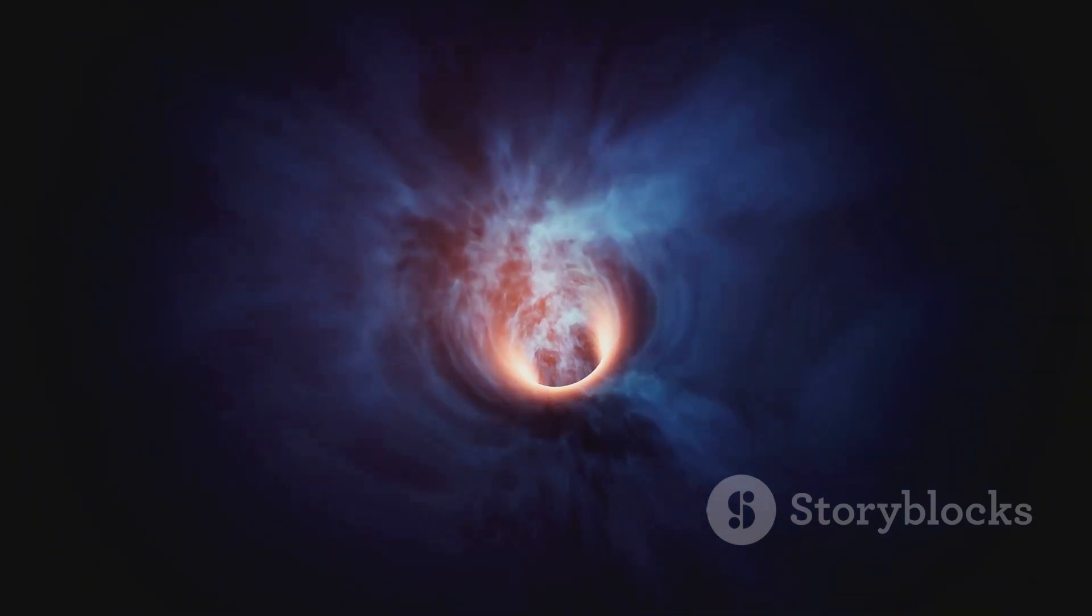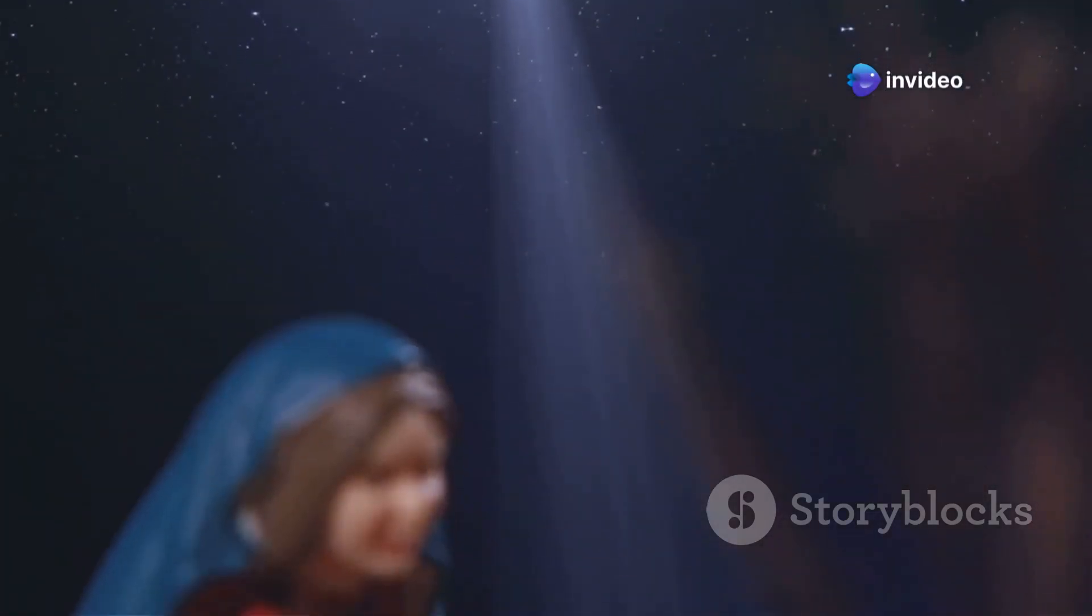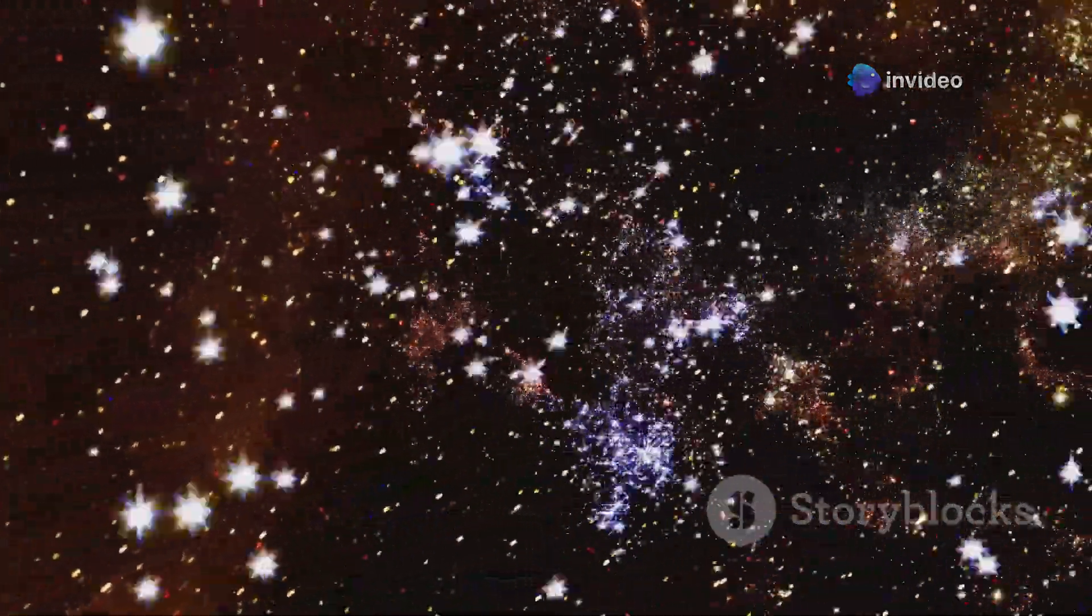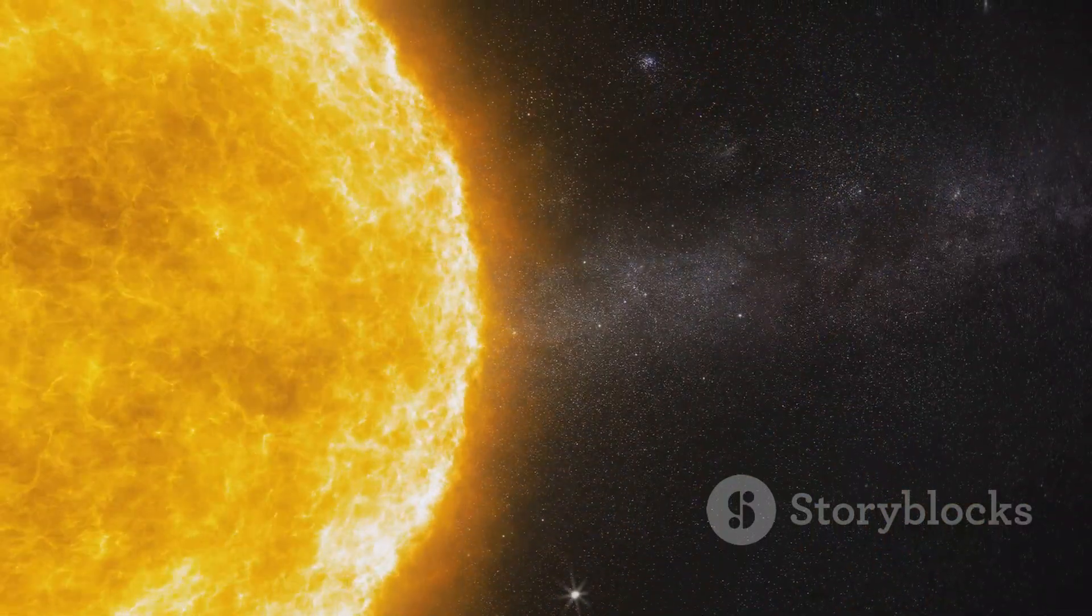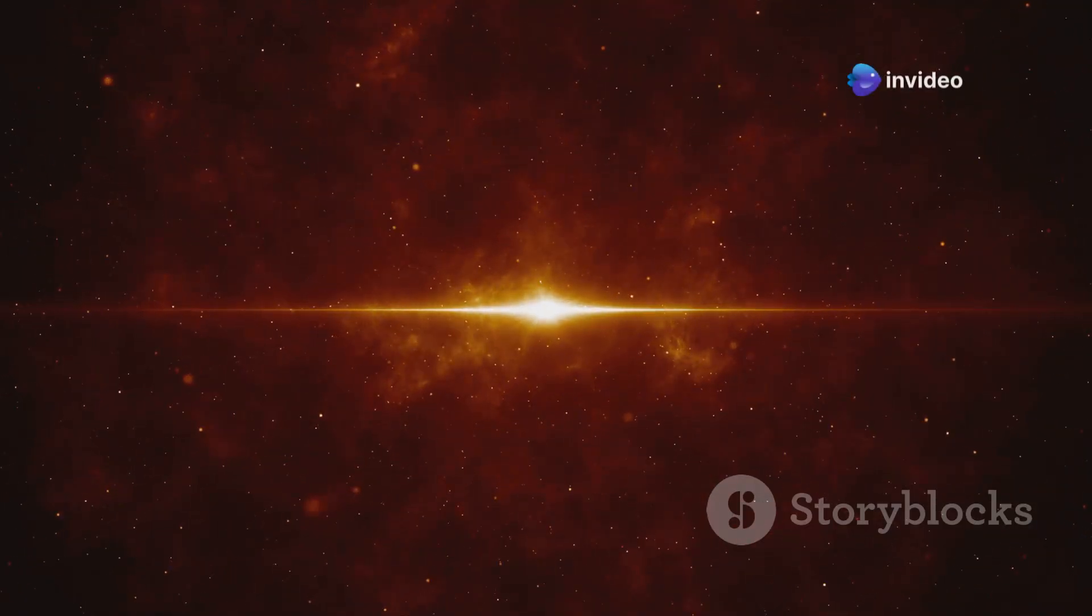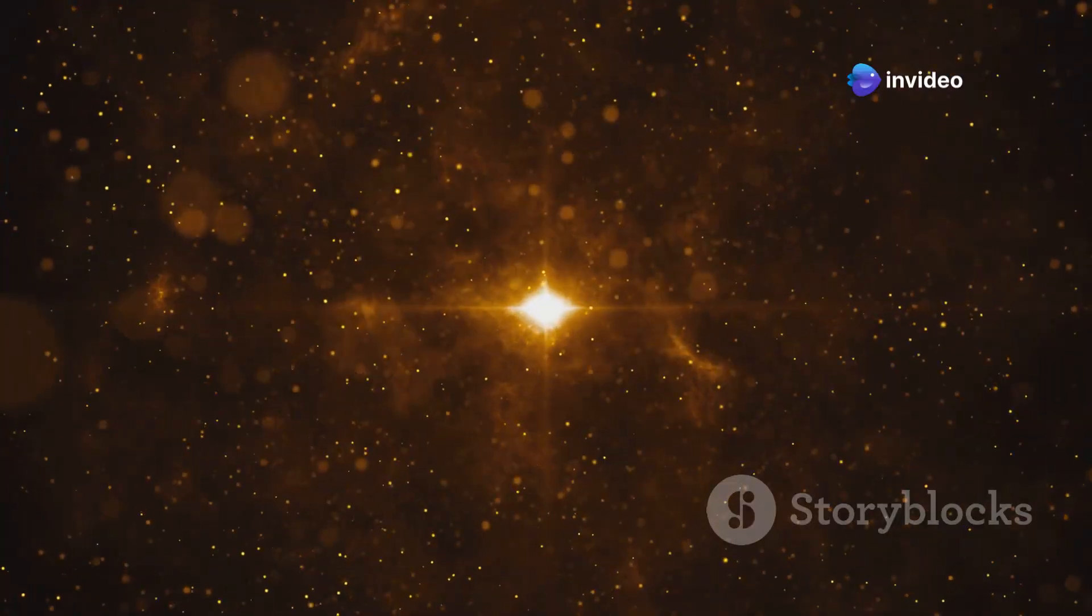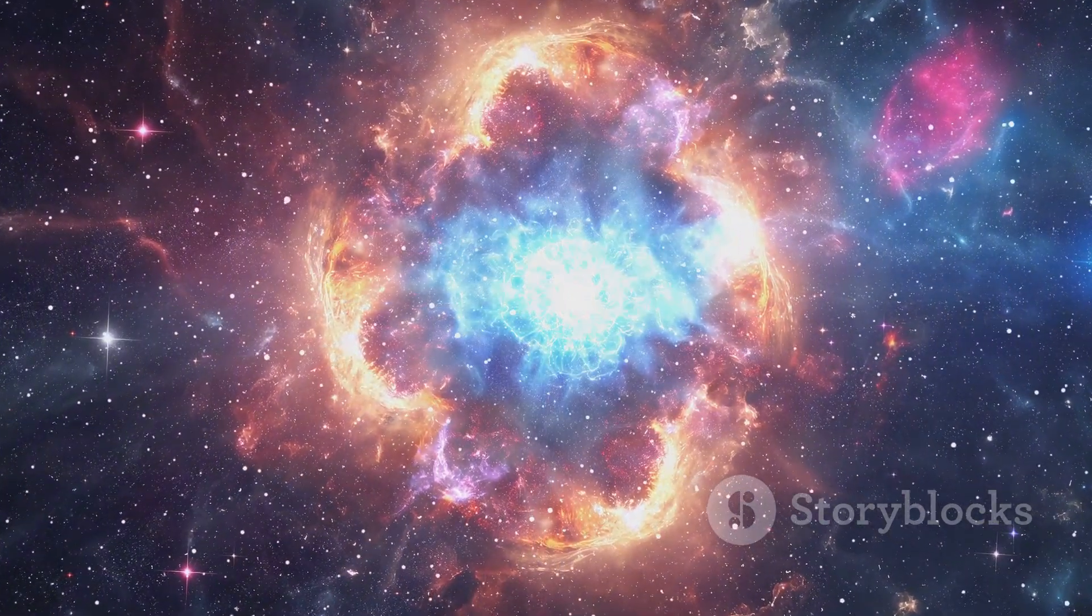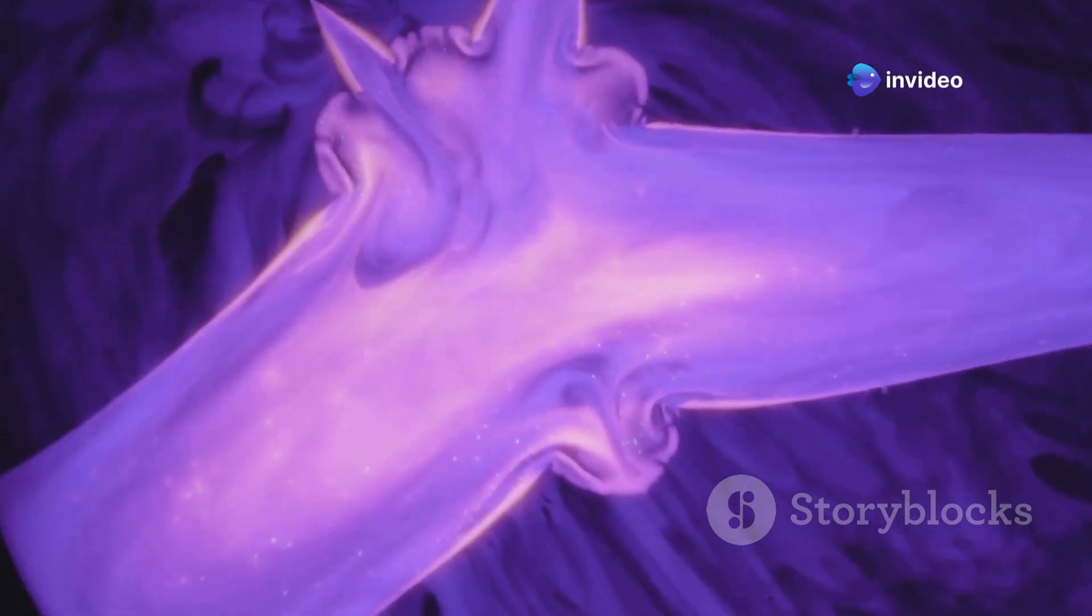Hypergiants are the most massive and luminous stars in the universe. These stellar behemoths are incredibly rare and short-lived. They exist at the extreme edge of stellar evolution. What sets hypergiants apart is their sheer size and luminosity. They can be thousands of times larger than the sun and millions of times more luminous. Their existence pushes the boundaries of what we thought possible for a star. These stars are not just bigger—they are fundamentally different. They exhibit extreme stellar winds, shedding enormous amounts of mass throughout their short lives. They are also incredibly unstable, prone to pulsations and eruptions.